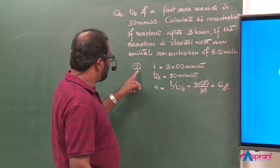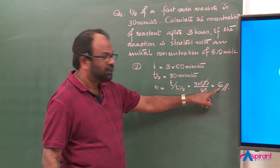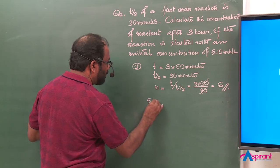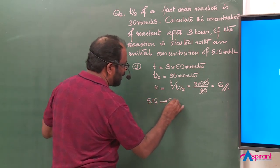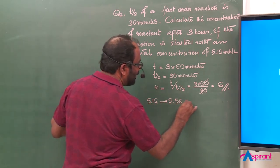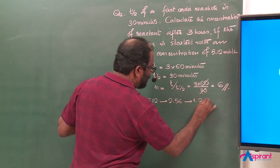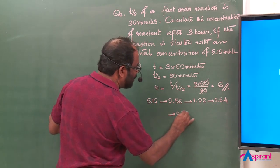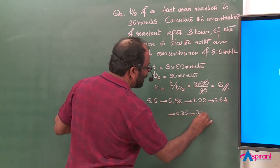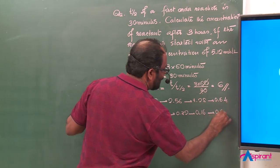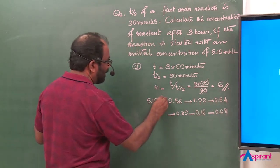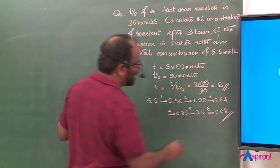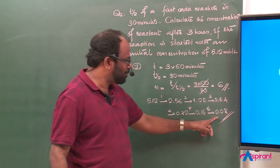In the second method, number of half-lives is 6. Starting with initial concentration 5.12: after the first half-life it becomes 2.56; second: 1.28; third: 0.64; fourth: 0.32; fifth: 0.16; sixth: 0.08. After 6 half-lives, the concentration becomes 0.08 moles per liter.